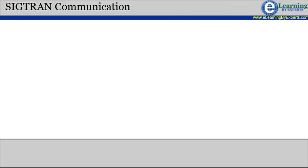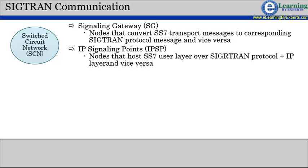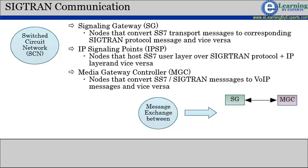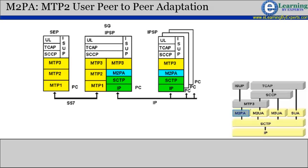SIGTRAN user adaptation layers emulate lower layers of the SS7 protocol and encapsulate the signaling of upper layer users in SCTP. Signaling protocol delivery over an IP network includes components like a signaling gateway (SG), IP signaling point (IPSP), and a media gateway controller (MGC). Message transfer takes place between signaling gateways, between a signaling gateway and a media gateway controller, and between signaling gateways and IP signaling points.